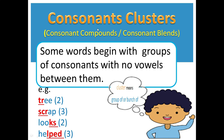Before starting consonant clusters, you should know what consonants are. We have divided the alphabets into two types: consonants and vowels. Vowels are A, E, I, O, U. When we make a word with these alphabets we use vowels, and consonants are all the other alphabets — like B, C, D, F, G, H — these are all consonants.